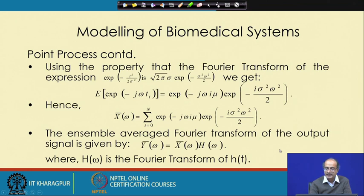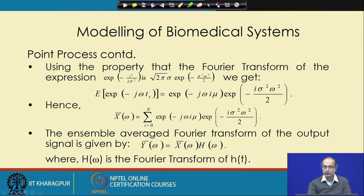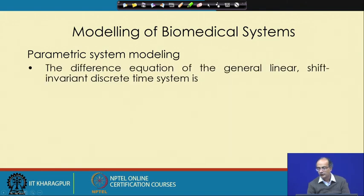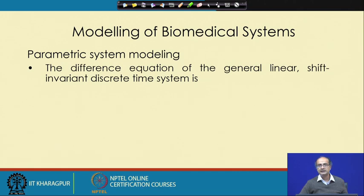Where H(ω) is the Fourier transform of the impulse response h(t), that is the way we can get to know about the output. We now have enough understanding of the point process, and with that we will leave the topic here today and start the next part in the next session. Thank you.